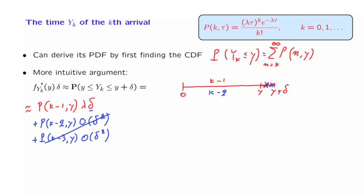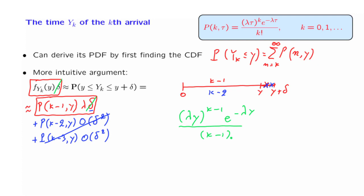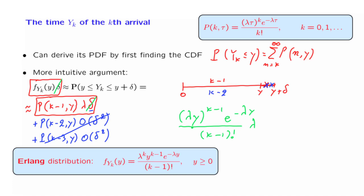We end up with an approximate equality between the PDF times delta and this expression. Delta appears on both sides, so we can cancel it, and we have a formula for the PDF. The PDF of Y_k equals the probability of k minus 1 arrivals in an interval of length y, times lambda. Substituting the Poisson PMF with k minus 1 in place of k and y in place of tau gives lambda y to the power k minus 1, times e to the minus lambda y, divided by (k minus 1) factorial. Multiplying by the extra factor of lambda yields the final formula for the PDF of Y_k.